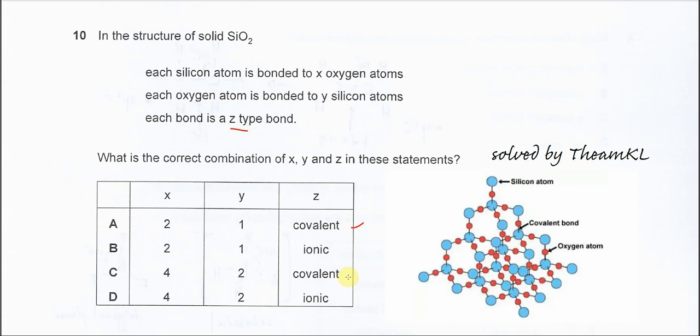Now let's look at the numbers of atoms that are involved. Let's look at the blue particle which refers to silicon. The blue particle is actually bonded to four - one, two, three, four - red particles. So the red particles are oxygen. One silicon bonded to four oxygen, so therefore the X is four.